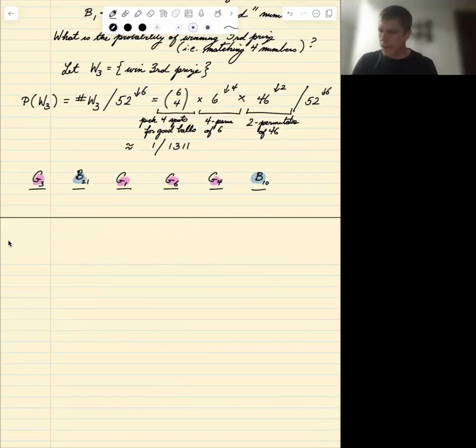So let's remember the logic. There are six spots in line. We have to choose four of them. We then have to fill those four spots with four of the six good balls put in the first, the second, up to the fourth chosen spot. And then we have to fill the remaining two spots with an ordering of the two out of the 46 bad numbers. Alright, that's one model.